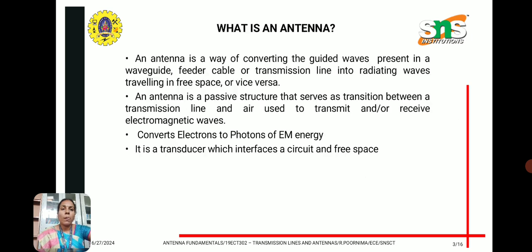What is an antenna? An antenna is a way of converting guided waves present in a waveguide or transmission line into radiating waves traveling in free space, or vice versa. Basically, it converts an electrical signal coming from the line into free space as an electromagnetic wave radiation. An antenna is a passive structure that serves as the transition between the transmission line and air, used to transmit or receive electromagnetic waves.